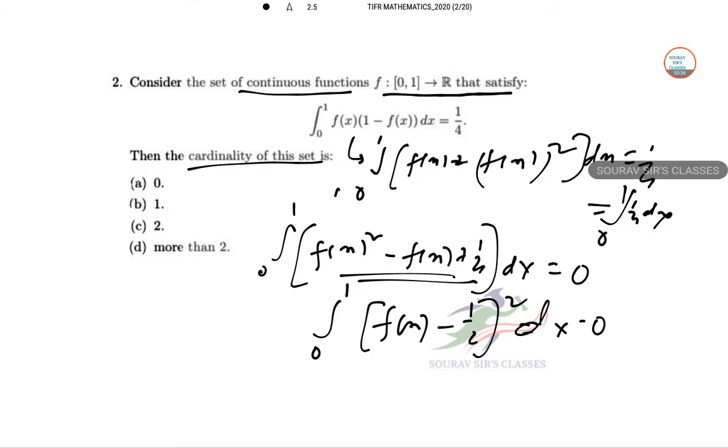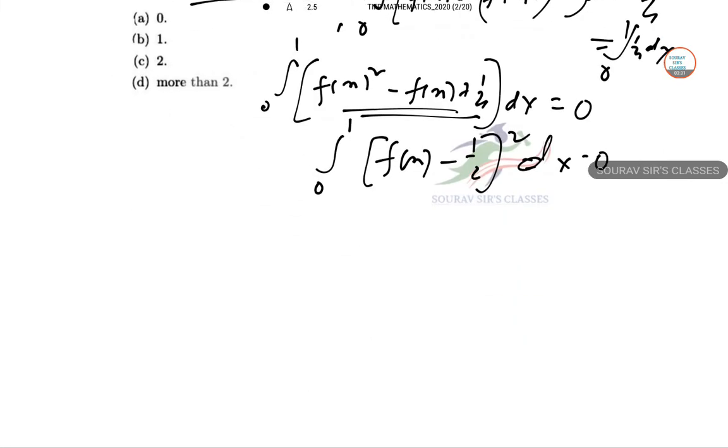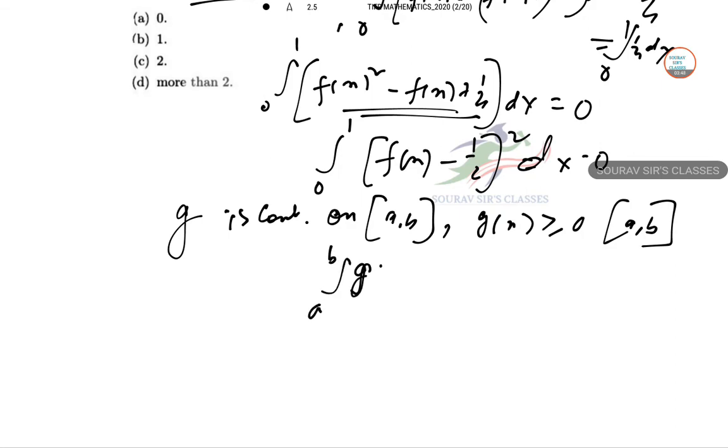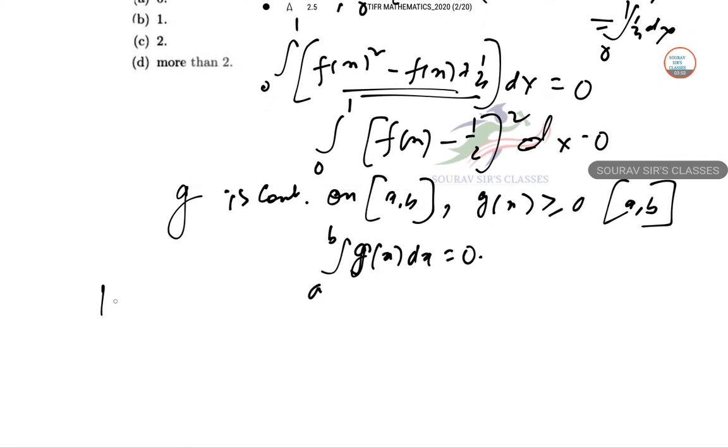Now using the result: if g is continuous on [a,b] and g(x) ≥ 0 in the closed interval [a,b], and integral from a to b of g(x) dx = 0, then g(x) = 0 for all x belongs to [a,b].